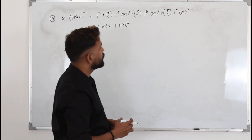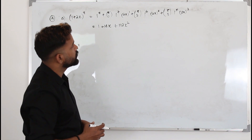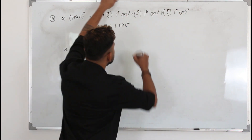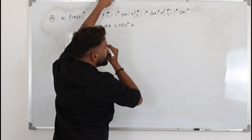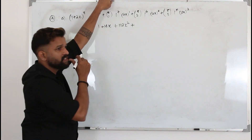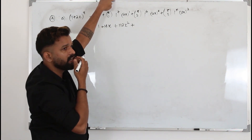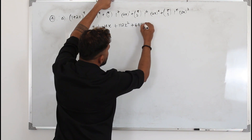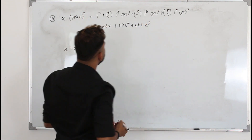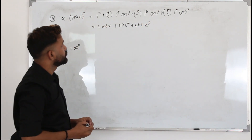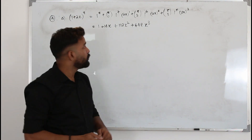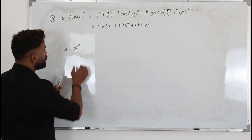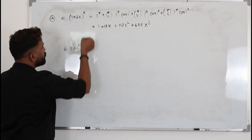Completing the fourth term: 2³ = 8, so 56 × 8 = 448x³. The expansion is 1 + 16x + 112x² + 448x³. That's the answer for Part A.